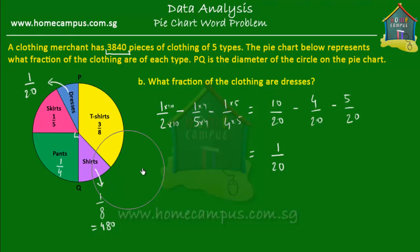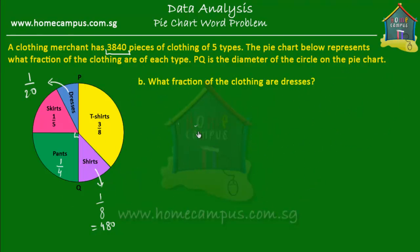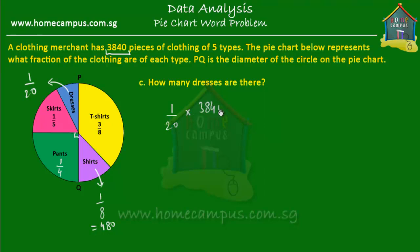The next question is: how many dresses are there? This is quite simple. We know that 1/20 of all the clothing is dresses. So we do 1/20 of 3,840. Simplifying, we get 192. So 192 pieces of clothing are dresses.